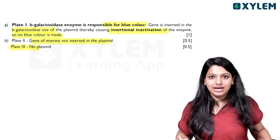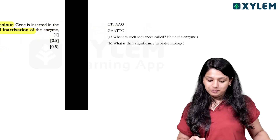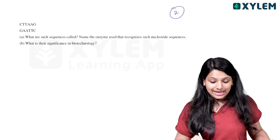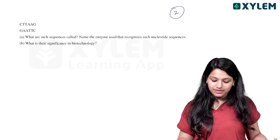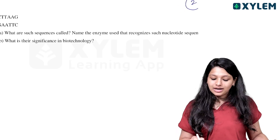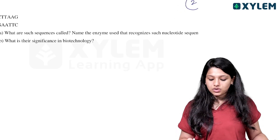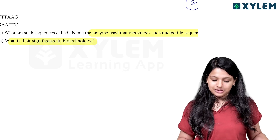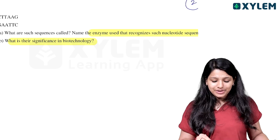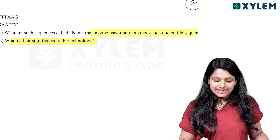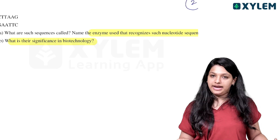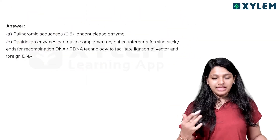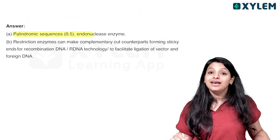From the sequences CTTAAG and GAATTC — what are such sequences called? These are palindromic sequences. Name the enzyme used to recognize them and state their significance.